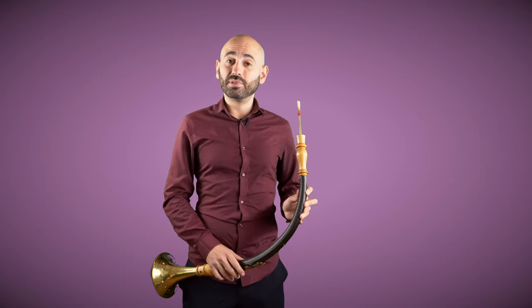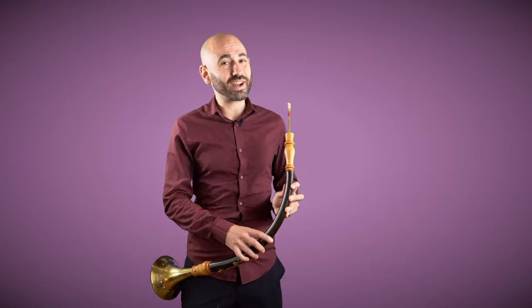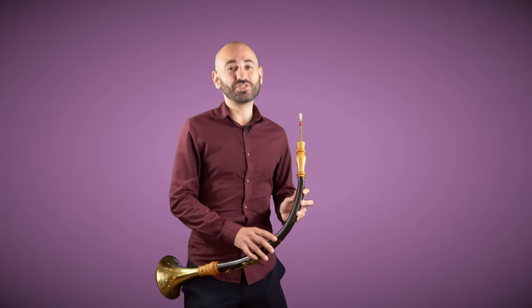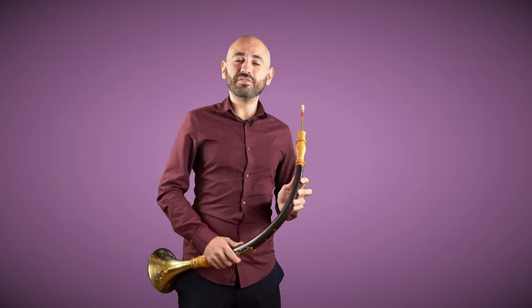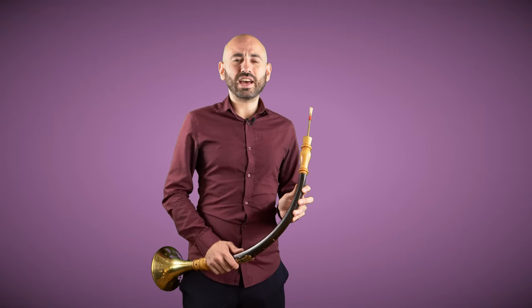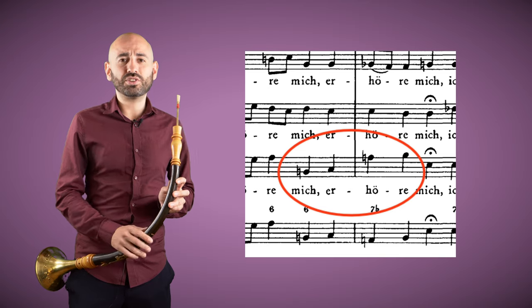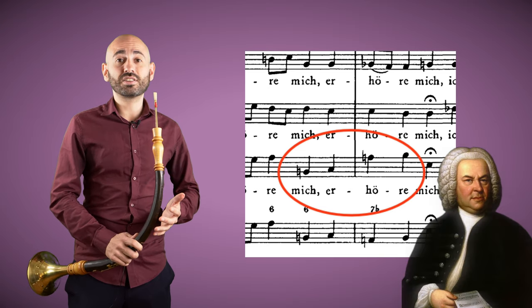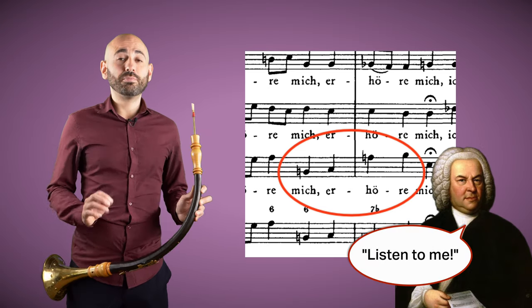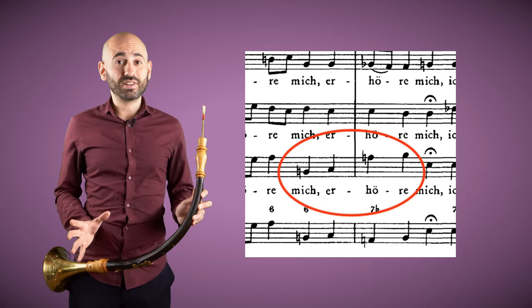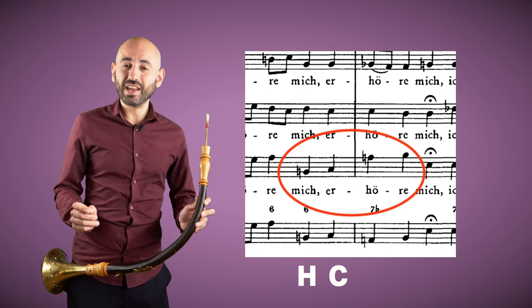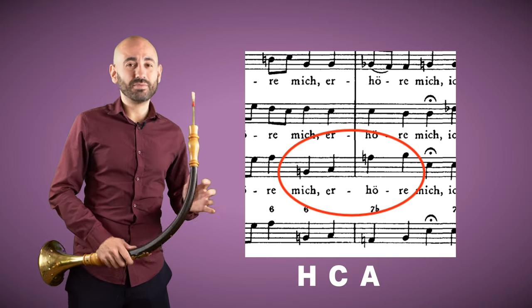Cool, isn't it? Here's an example of Bach leaving us an Easter egg in his St. John Passion. That's really clever because it's a piece for Easter. It's in the final chorale, and at the words 'Erhöre mich,' which translates to 'listen to me,' Bach has written H-C-A-B.